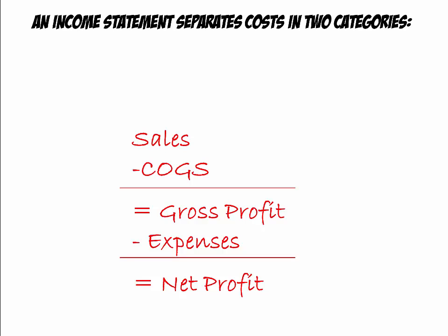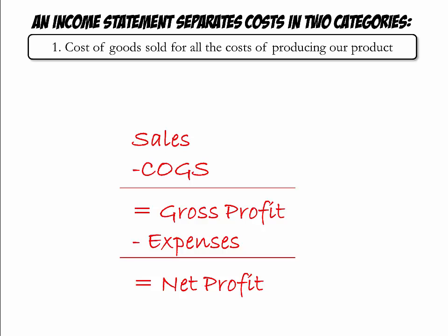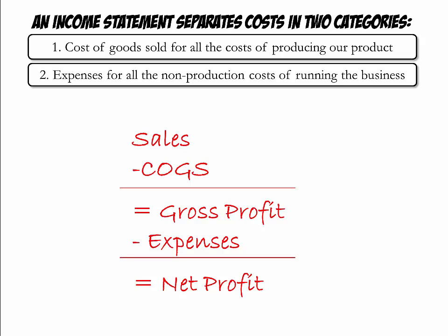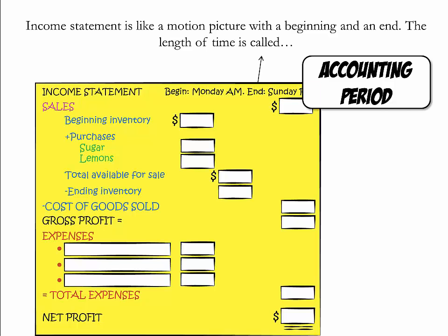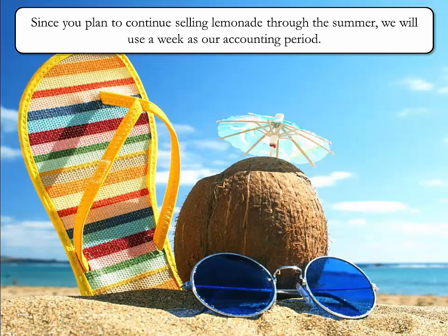An income statement separates costs into two categories: cost of goods sold for all the costs of producing our product, and expenses for all the non-production costs of running the business. Contrary to a balance sheet, which is like a snapshot, an income statement is like a motion picture — it has a beginning and an end. The length of time covered by the income statement is called the accounting period. Since you plan to continue selling lemonade through the summer, we will use a week as our accounting period.